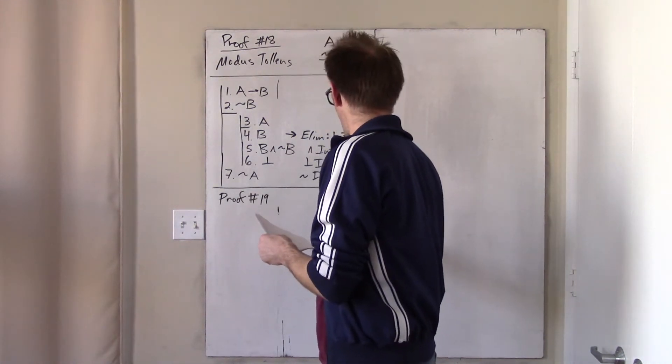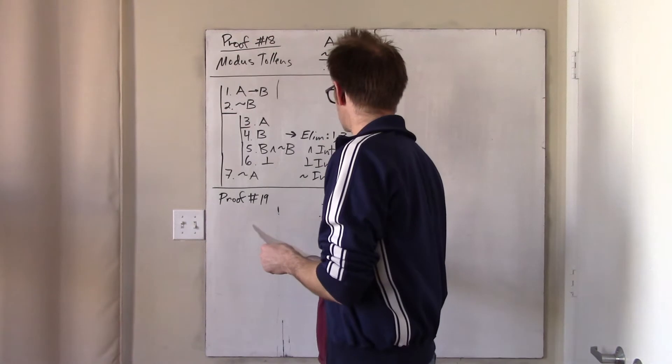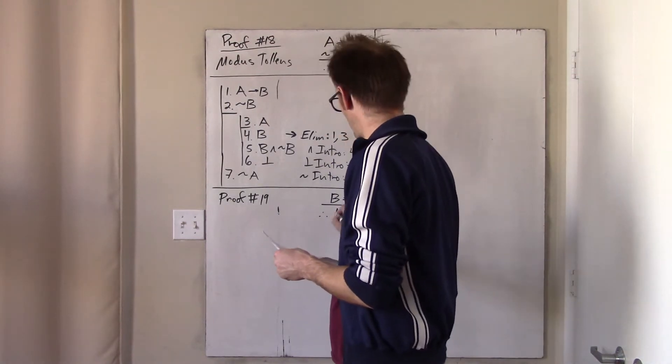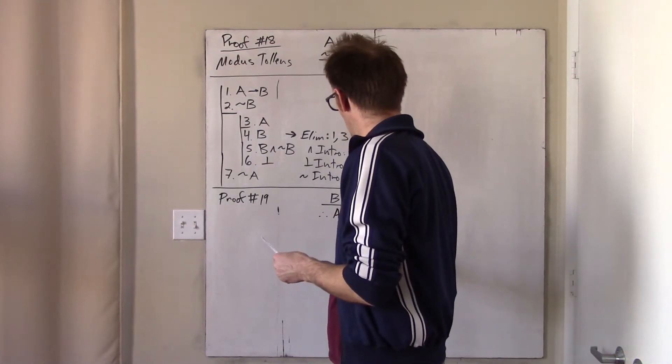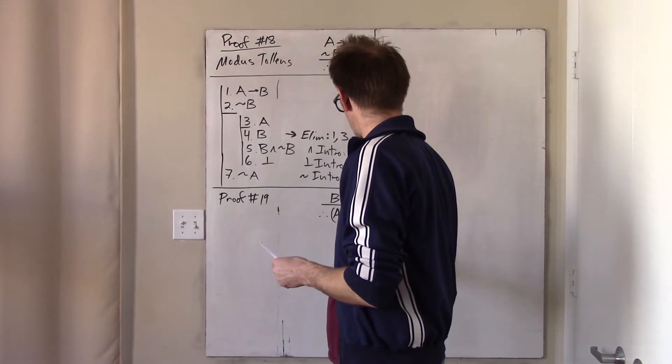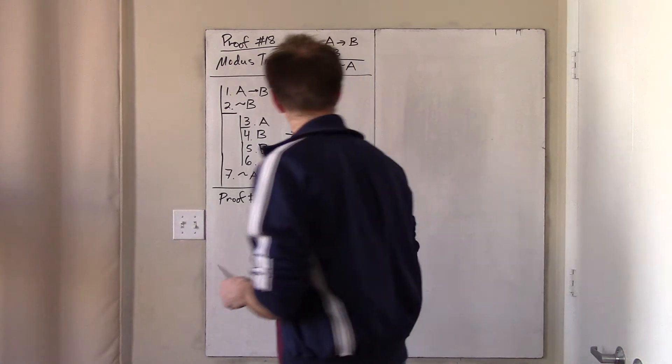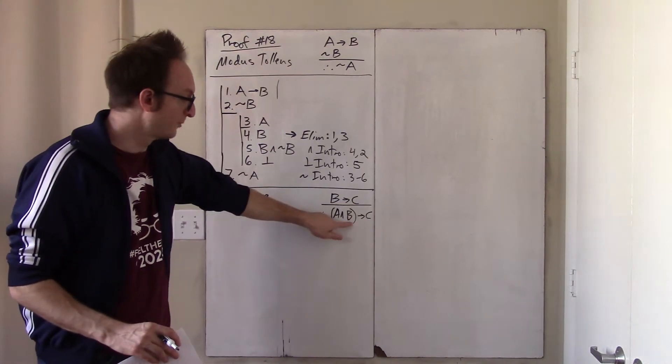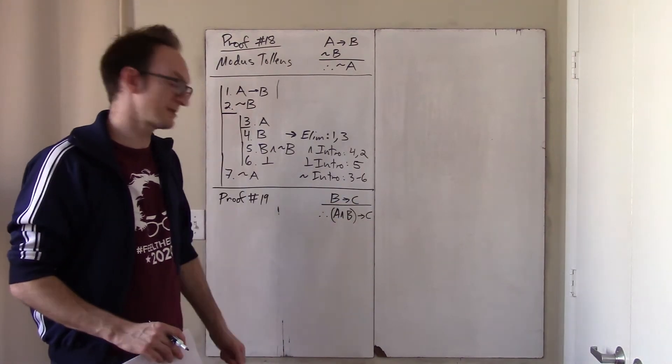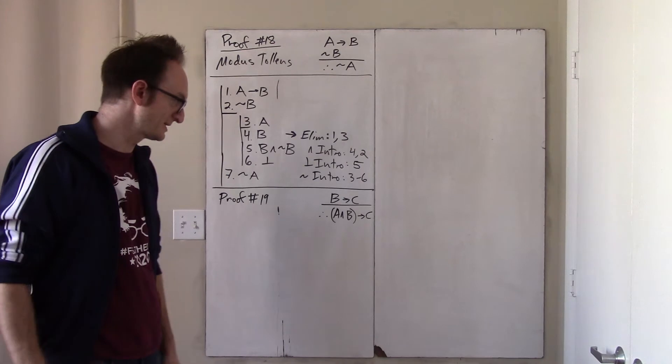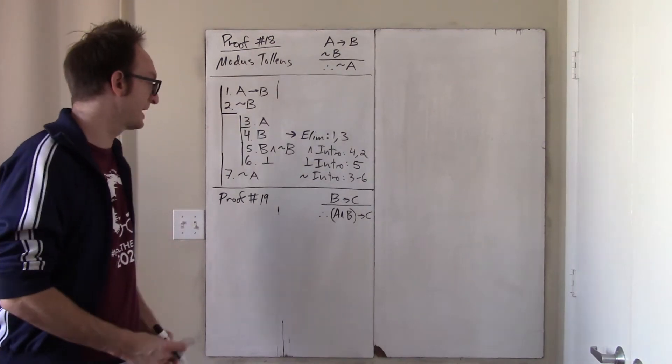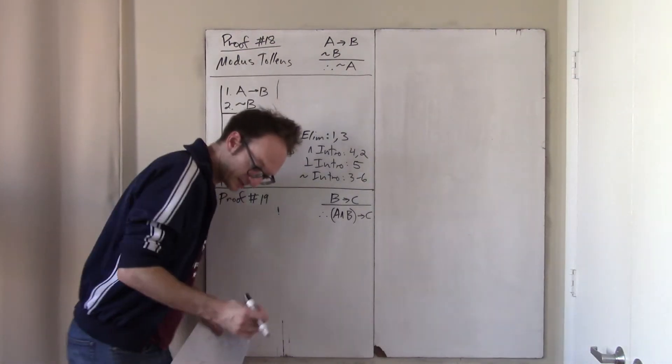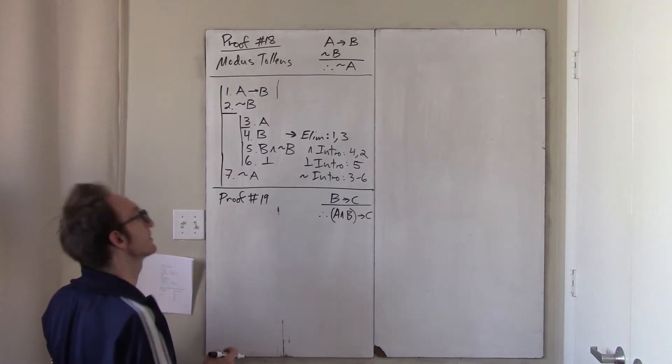What does this say? This also has a name, strengthening the antecedent. Okay, so if I know if B then C, I can conclude if A and B implies C. And of course, this makes complete sense. If B alone is enough to guarantee C, then having more information should also guarantee C. So this is quite reasonable. I'm already convinced.